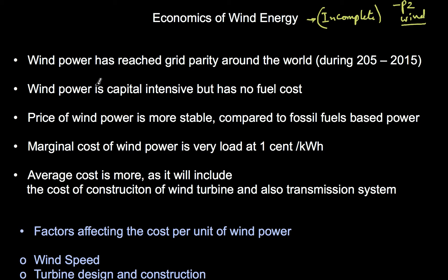Wind power has reached grid parity around the world during the period 2005 to 2015. Over that decade, different regions of the world slowly reached grid parity. Grid parity means the cost of wind energy has become comparable to the cost of mainstream energy sources like coal power or diesel power. Wind power is now reaching that equality, which means it's time for switching over from fossil fuels to wind energy.